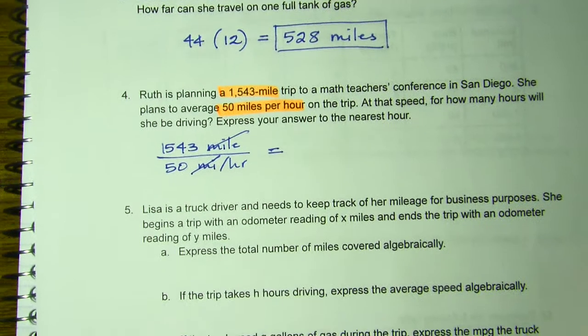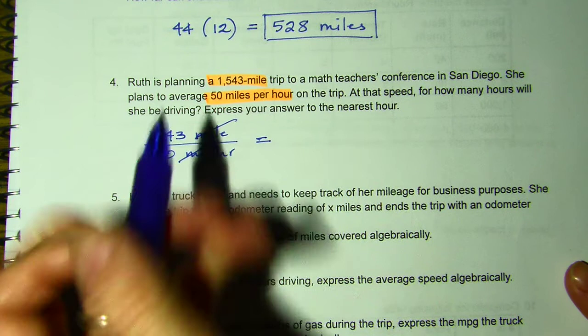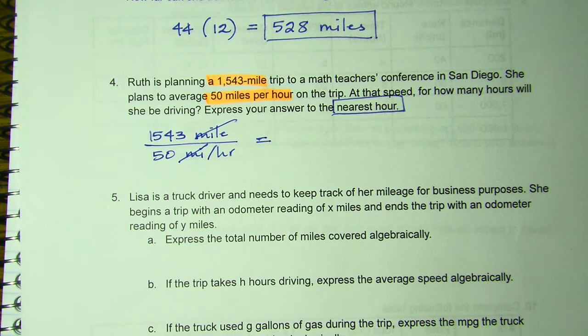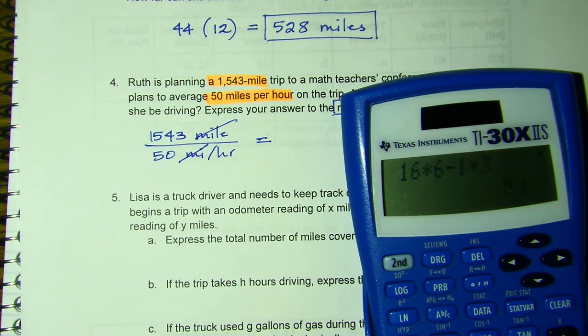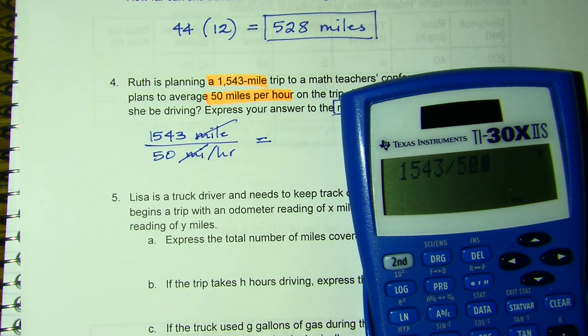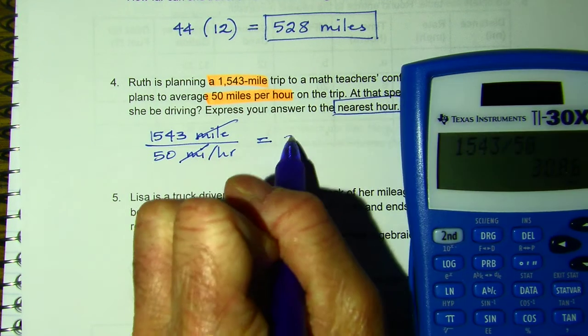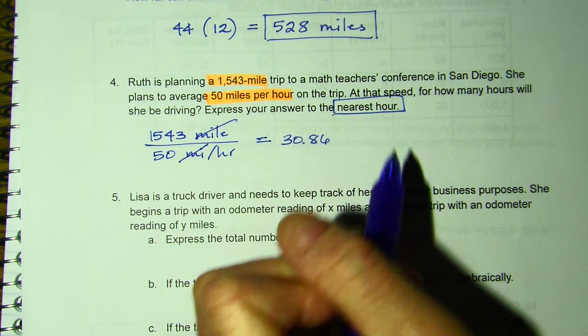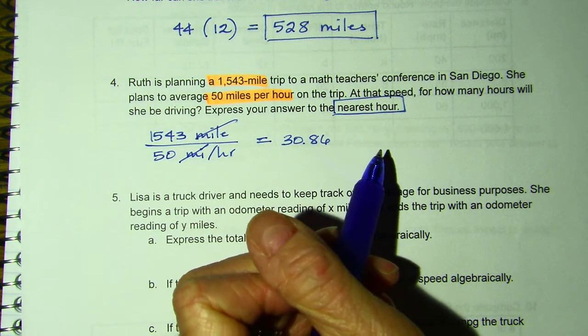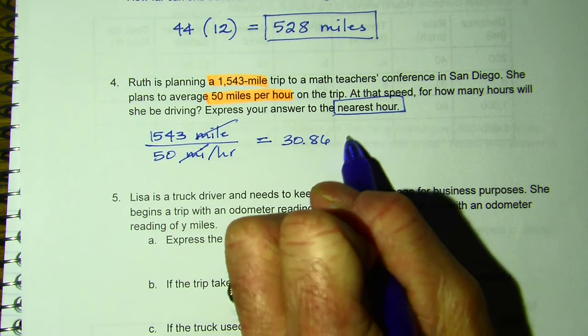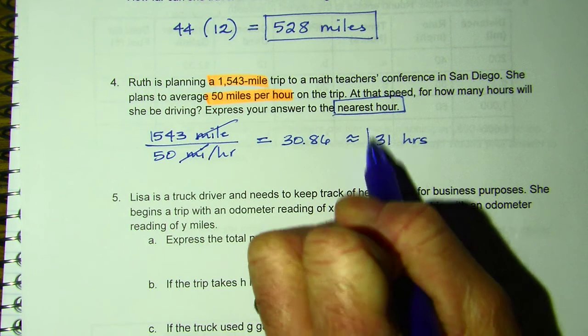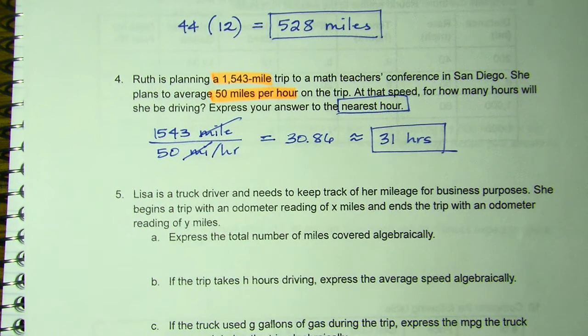And it says to the nearest hour. So they want the nearest whole hour. So 1543 divided by 50, and I get 30.86. So 0.8, does that round it to 31, or round it down to 30? Should round it up to 31 hours. So it'll take 31 hours to get to San Diego.